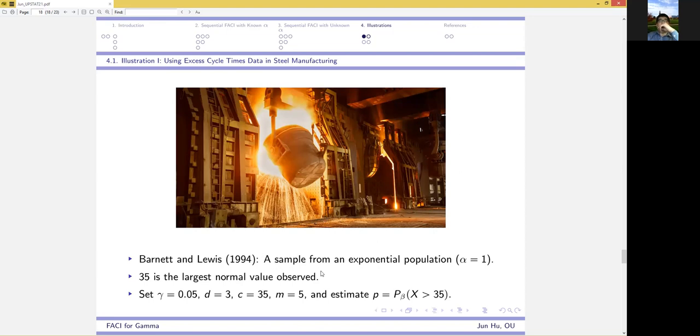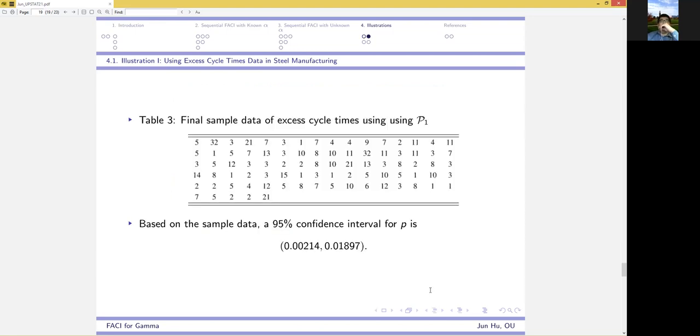There's a sample from exponential population recorded in this paper where exponential is a special case of gamma with known alpha equal 1. The probability of interest is that x is greater than 35. So we set these numbers and set out to estimate this probability. Implementing the first procedure,